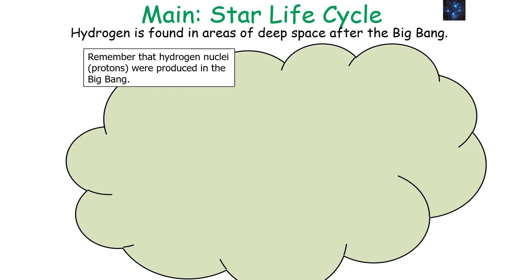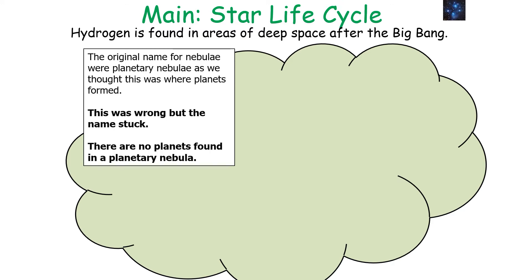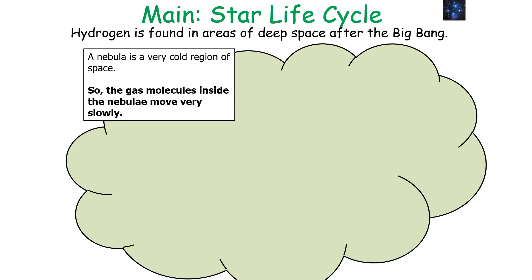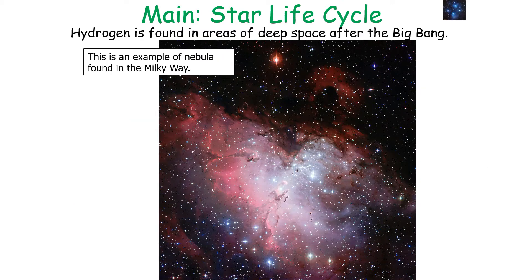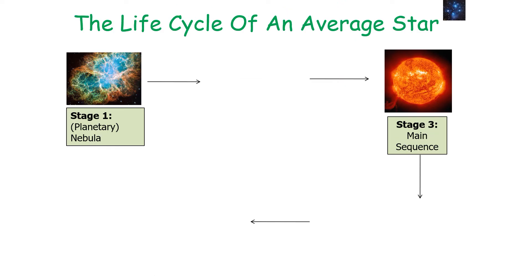Hydrogen can be found in areas of deep space after the Big Bang. Hydrogen nuclei or protons were produced in the Big Bang, and a collection of hydrogen gas in the universe is called a nebula. The original name for a nebula was a planetary nebula, as it was thought this is where planets formed — this was wrong but the name stuck, so remember there are no planets in a planetary nebula. A nebula is a very cold region of space, meaning the gas molecules inside move very slowly.